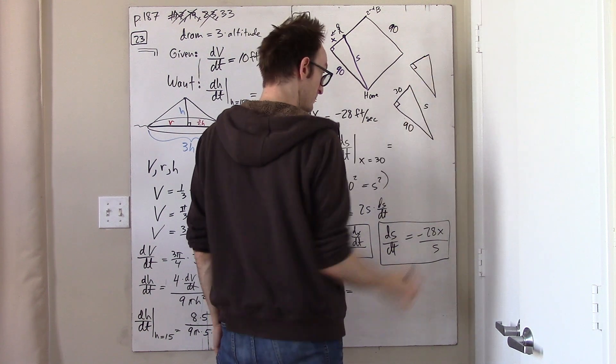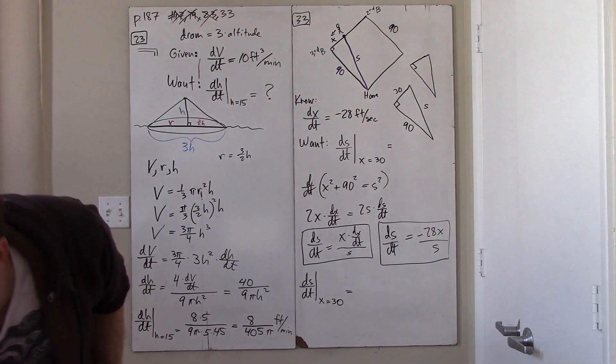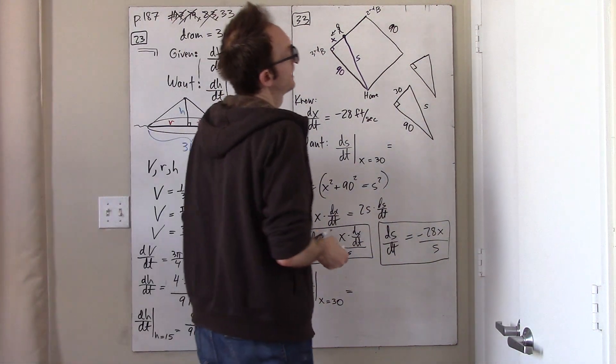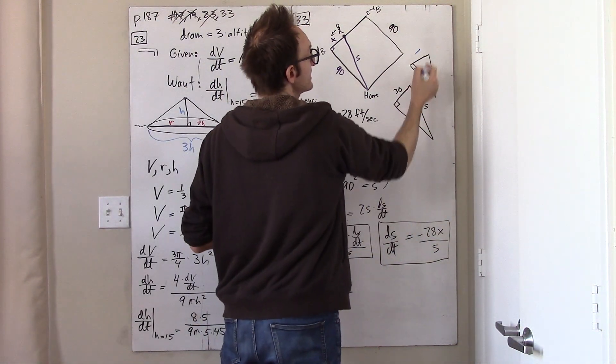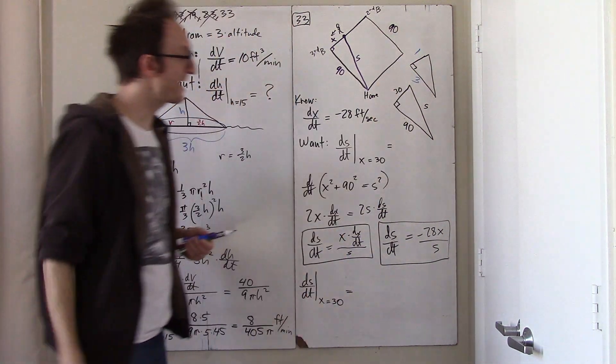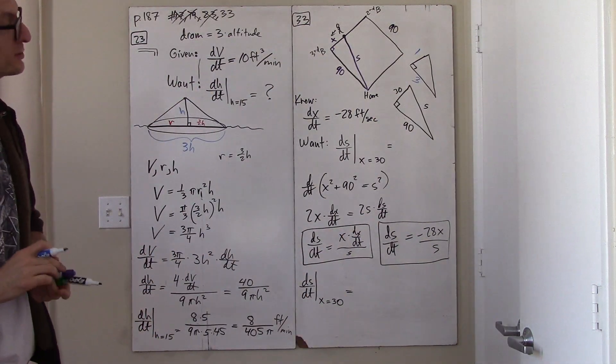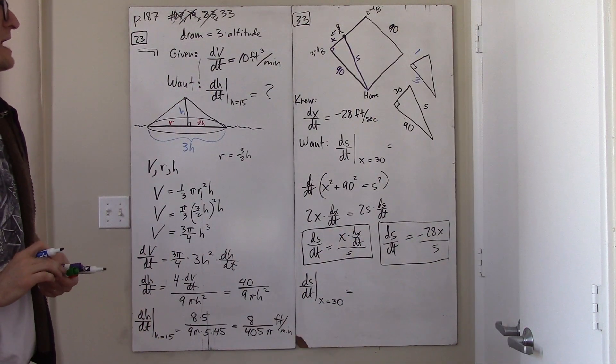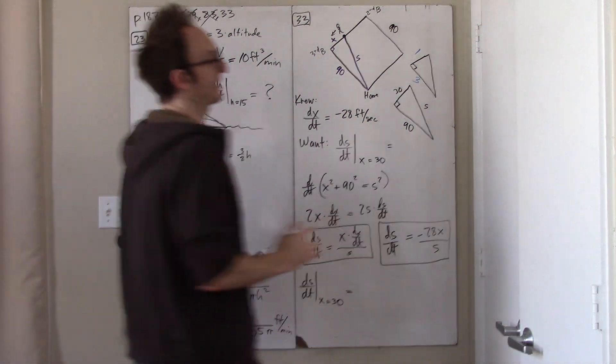then you want to think of this as being one and this as being three. And if you have a right triangle whose legs are one and three, then I think in your head you can just say what the length of the hypotenuse is.